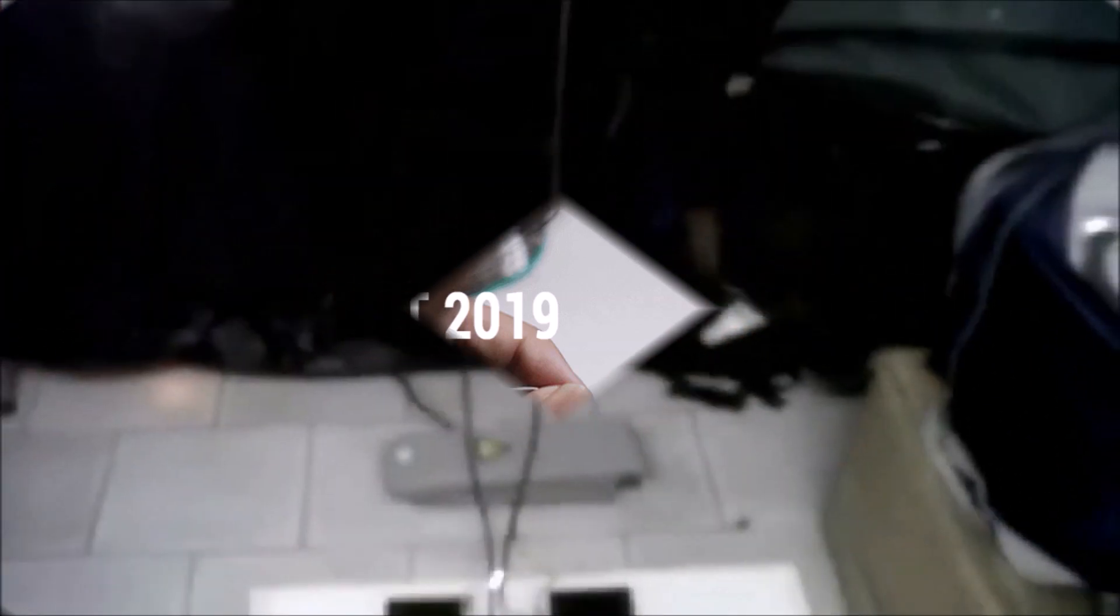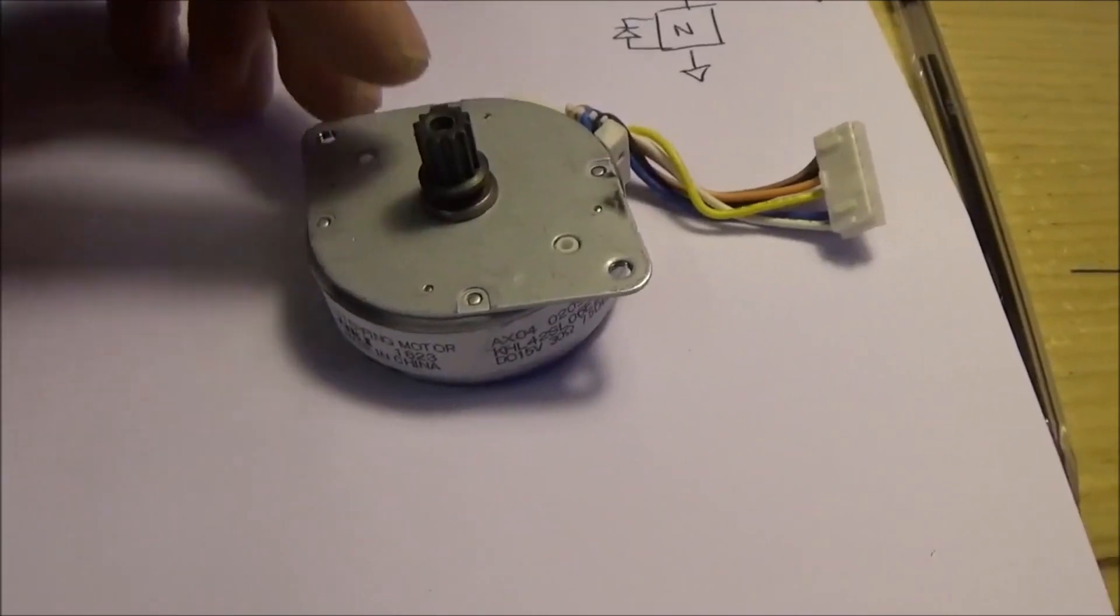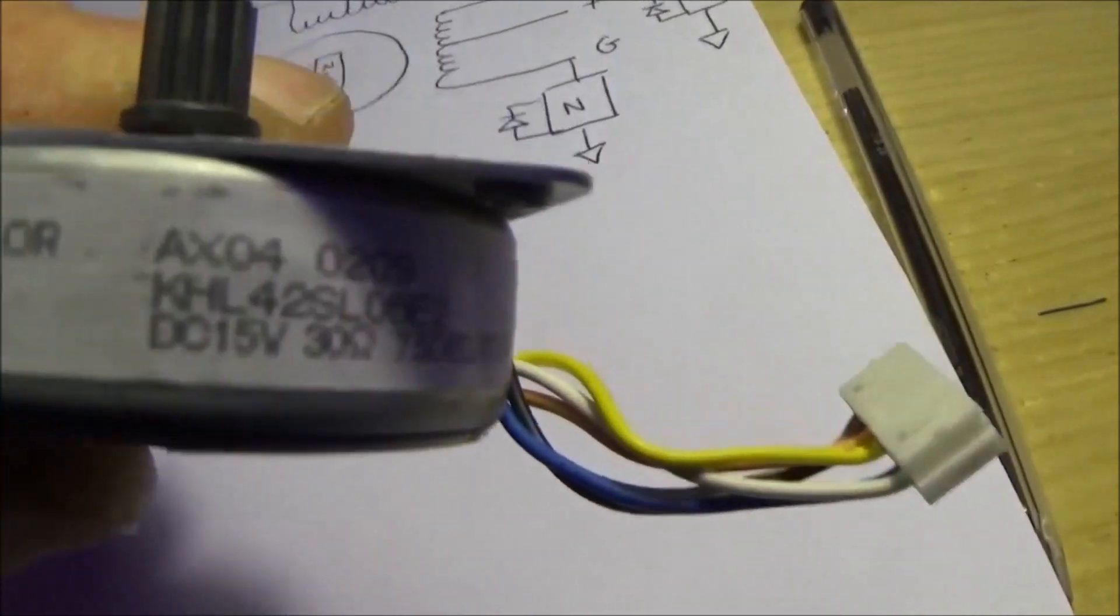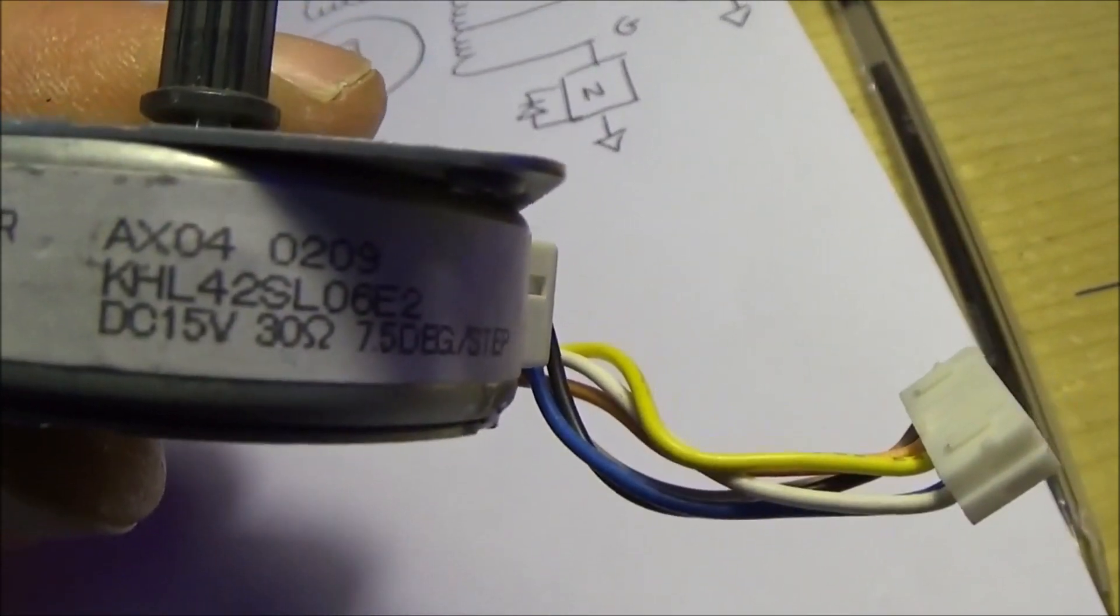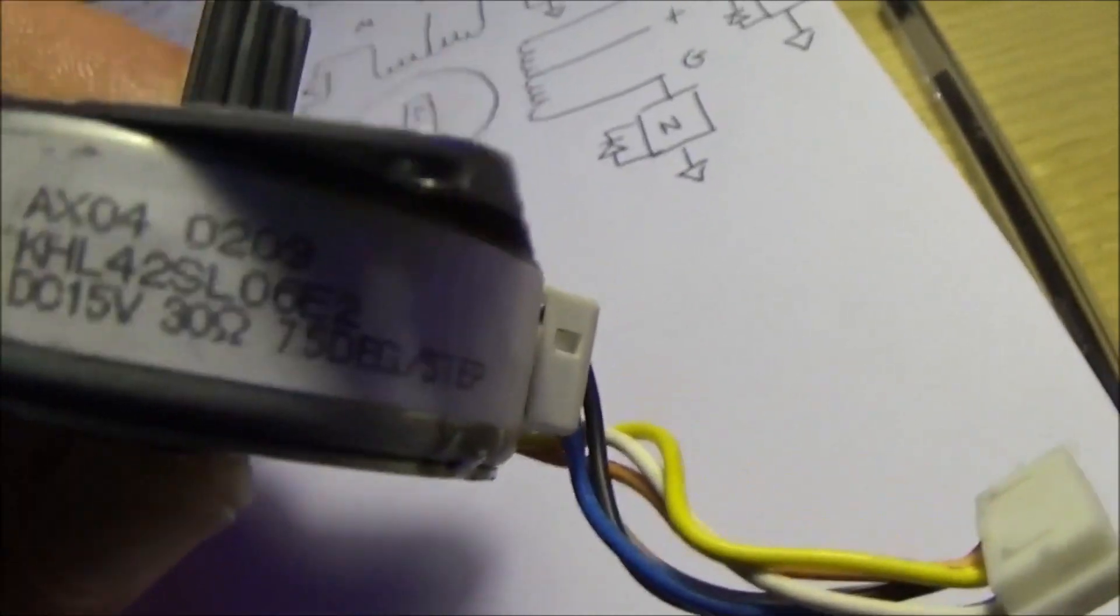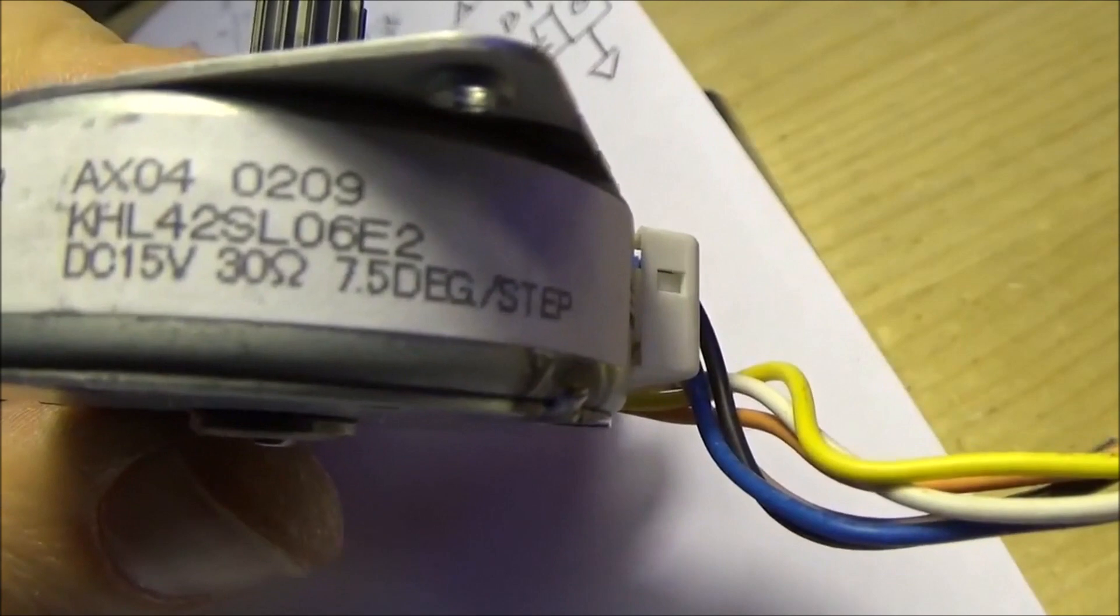Check this out. I tore down this motor from my printer. It is a stepper motor. It is a DC 15 volts, 30 ohms and with 7.5 degrees per step.